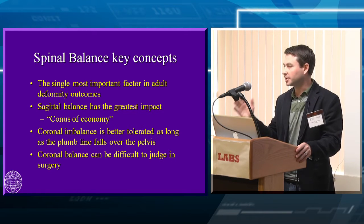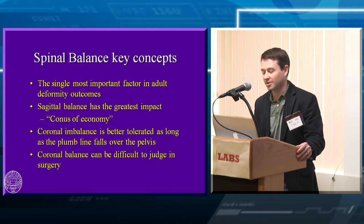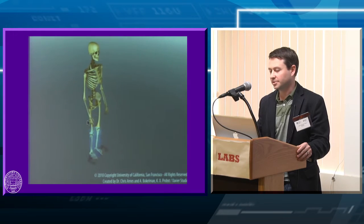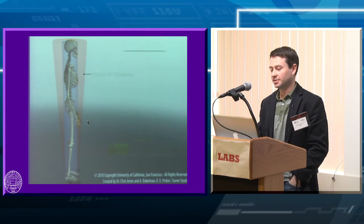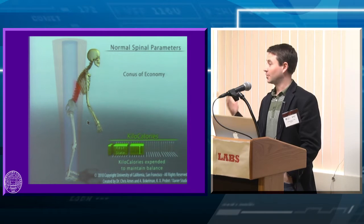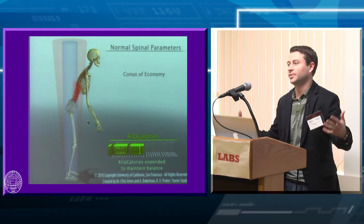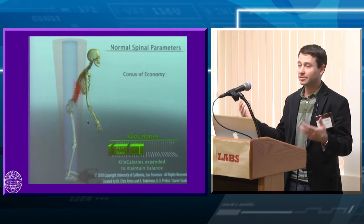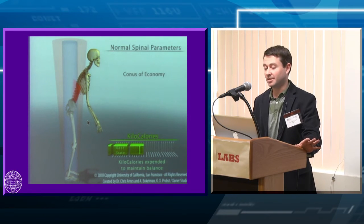Coronal balance is actually a little bit tricky to judge in surgery; sagittal is a little easier to tell whether you've got it or not. This video from Chris Ames at UCSF shows that conus of economy. Essentially, you see a patient standing up — if they stand with their head balanced over their shoulders, balanced over their pelvis, balanced over their feet, they can stand up all day without using a lot of energy. You have economy; you're not doing any real work to stand up.